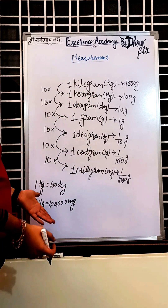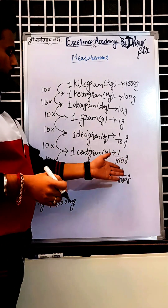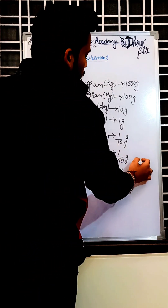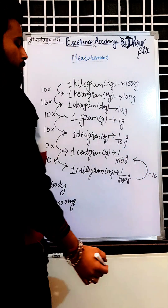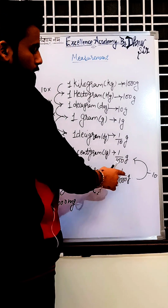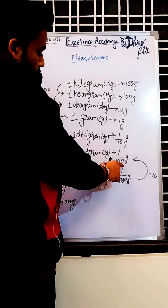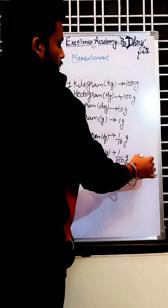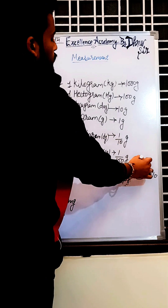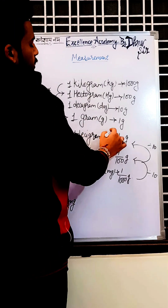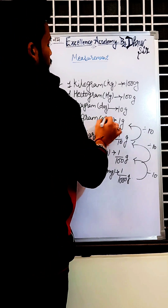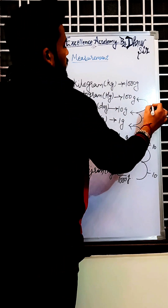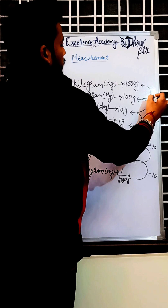Like this, you can change anything — hectogram into decagram, decagram into grams, centigram, milligram — whatever you want. Just count the steps and multiply. Now if we have to reverse it, moving from smaller unit to bigger unit, we have to divide. To change milligram into centigram, divide by 10.